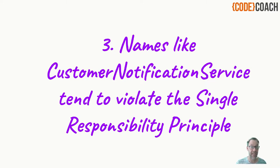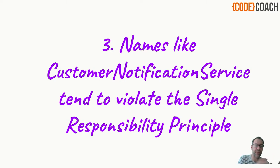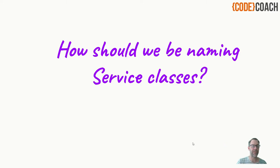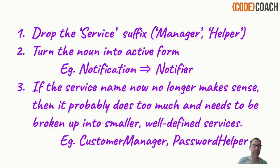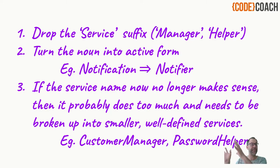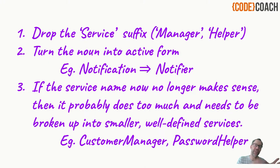They tend to be attractors for lots of code that just vaguely has to do with customer notifications, or managing employees, or helping with payments. We want to have names for services — and for other objects — that are crystal clear about what they're about. So how should we be naming service classes? How about we drop the Service, Manager, or Helper suffixes to start with? That's the first thing we should do. And then we should turn the noun into the active form — notification becomes notifier.